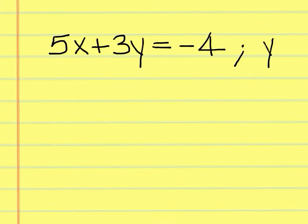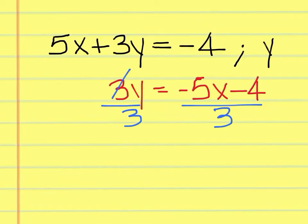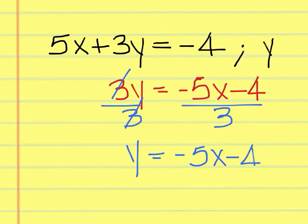To get y by itself, we must first move the 5x over to the right side and make it negative 5x minus 4. Remember you can also write negative 4 minus 5x. Now you must divide both sides by 3. When you do that, these cancel out and you are left with negative 5x minus 4 over 3.